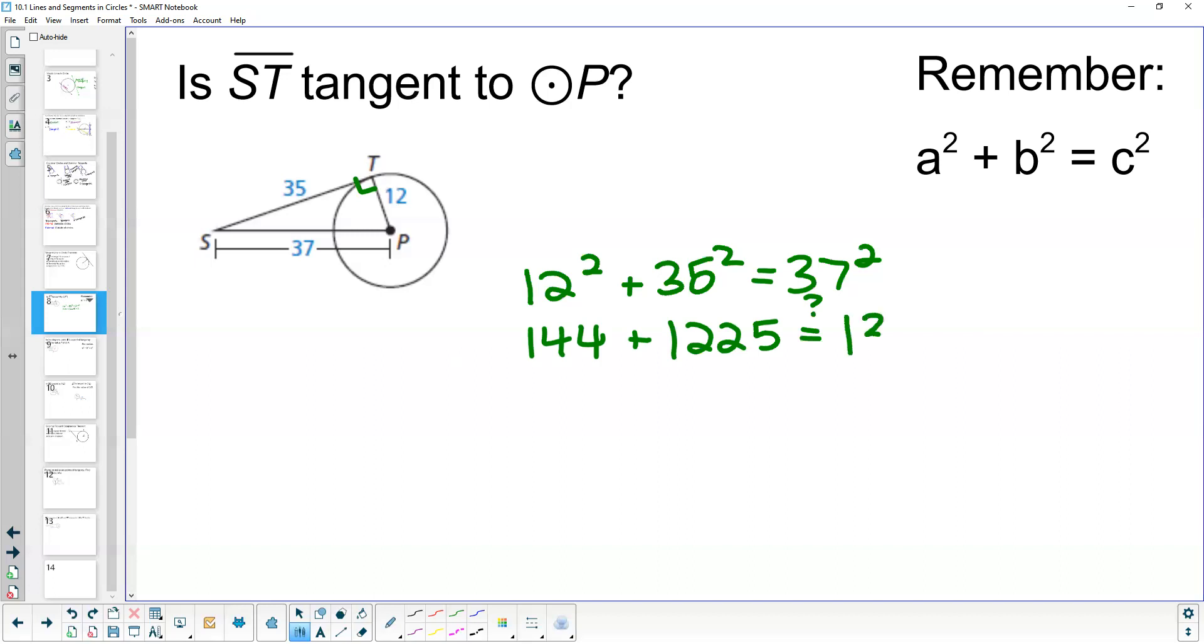144 plus 1,225 equals 1,369. They are equal, meaning that ST is tangent to circle P.